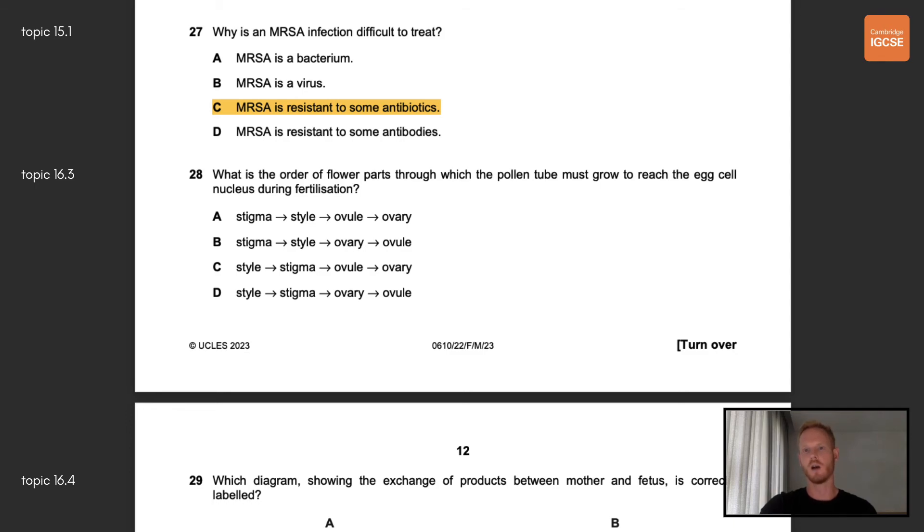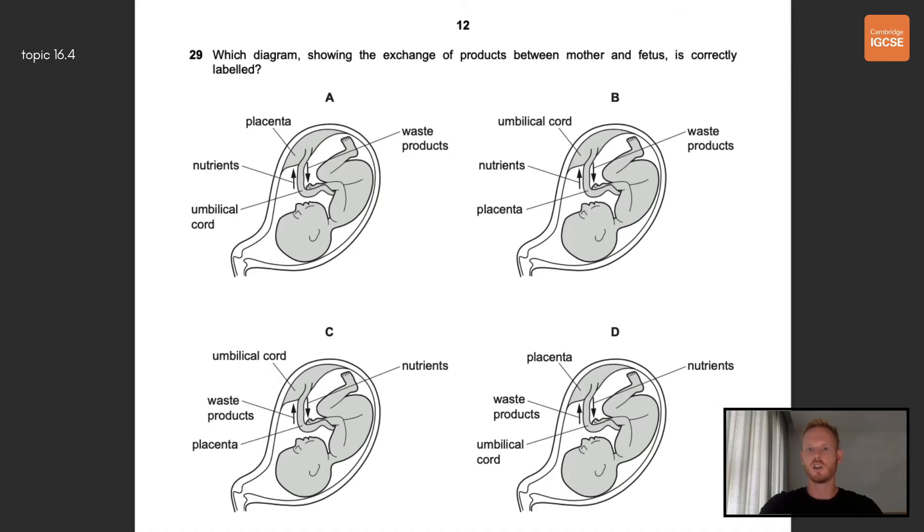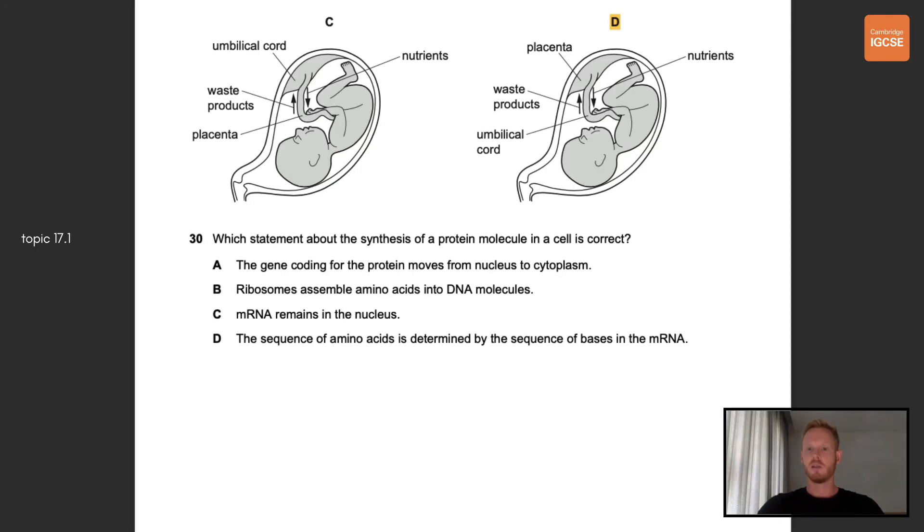Question 28, what is the order of flower parts through which the pollen tube must grow to reach the egg cell nucleus during fertilization? The correct answer here is B. When a pollen grain is transferred to a stigma, a tiny tube called a pollen tube grows from the grain, down the style, into the ovary, and then into an ovule through a tiny hole called a micropyle. Question 29, which diagram showing the exchange of products between mother and fetus is correctly labeled? The correct answer is D. The placenta is attached to the wall of the uterus and the umbilical cord connects the fetus to the placenta. Nutrients are passed from the mother to the fetus and waste products from the fetus are transferred to the mother. Question 30, which statement about the synthesis of a protein molecule in a cell is correct? The correct answer here is D. The sequence of amino acids is determined by the sequence of bases in the mRNA.